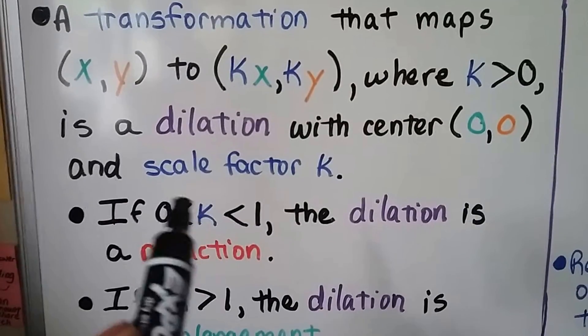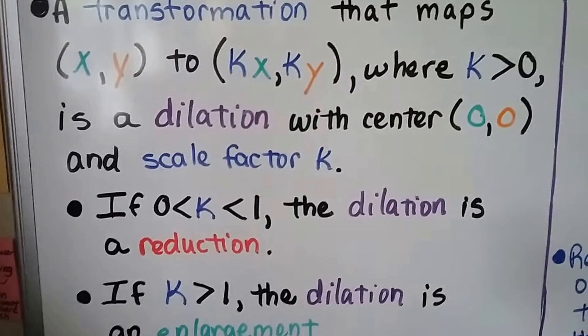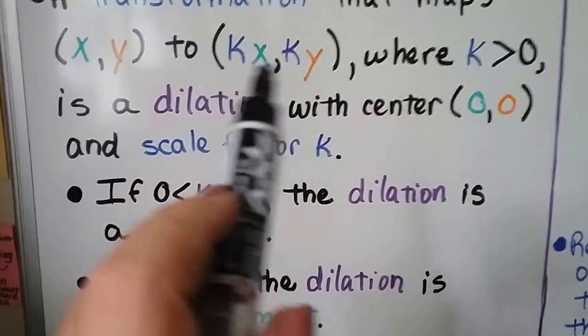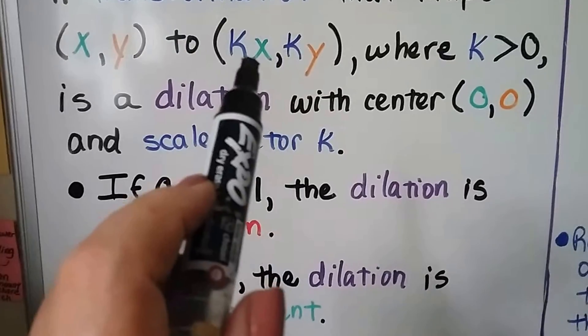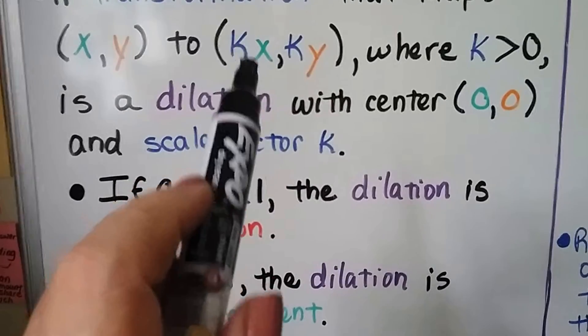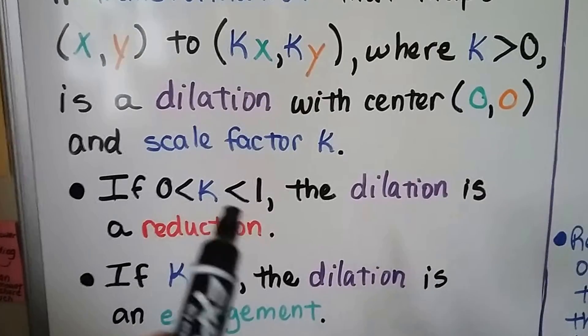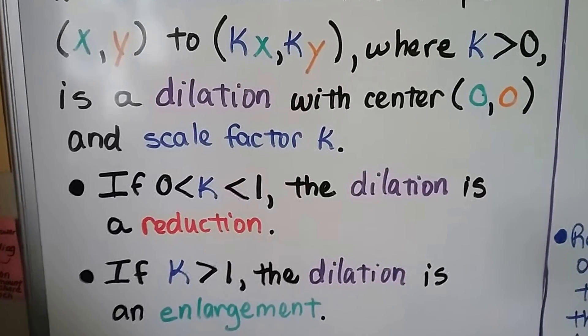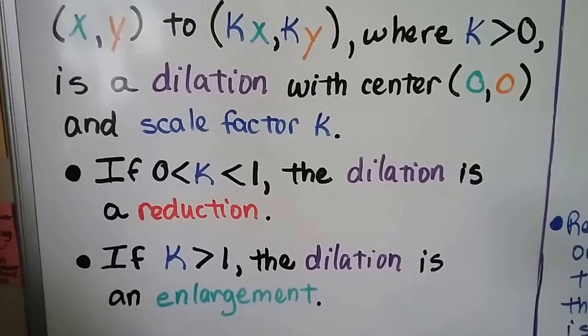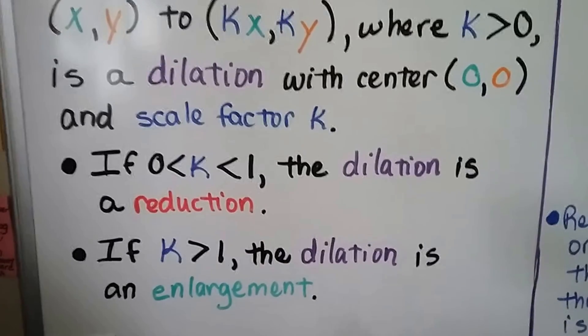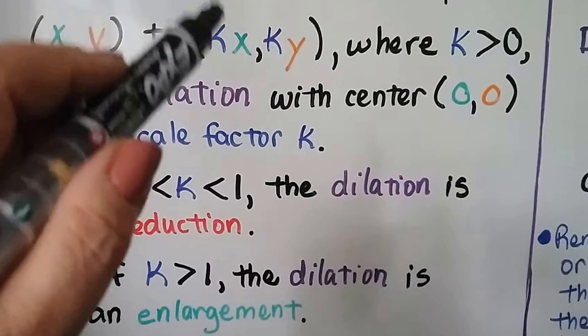If k is greater than 0 but less than 1, the dilation is a reduction. So if we're multiplying the x and y values by something less than 1 like 3/4 or 1/2 or 2/3, then it's going to be 3/4 or 1/2 or 2/3 the size of the original image, the pre-image. If k is greater than 1, the dilation is an enlargement because we're going to be multiplying it by 2 or 3 or 4.